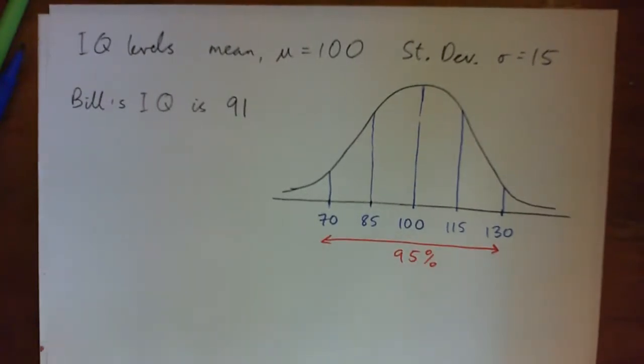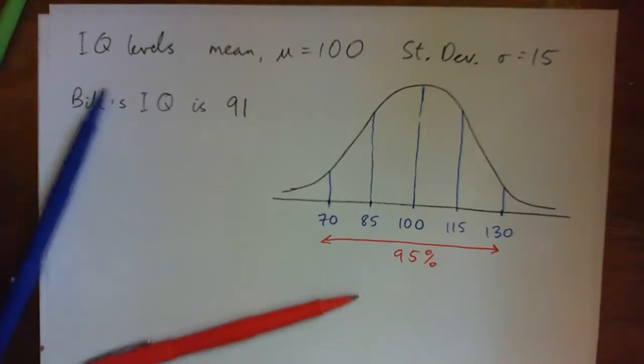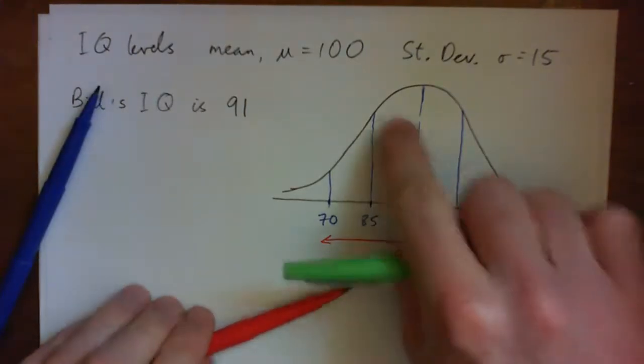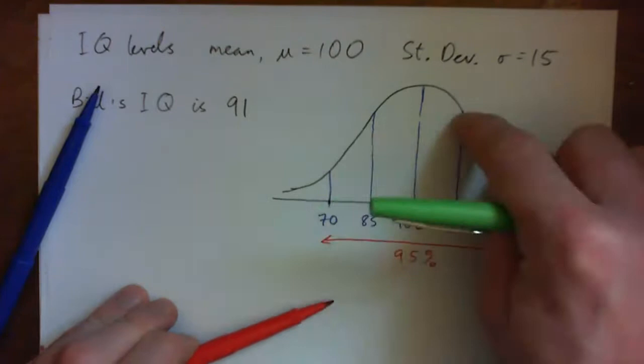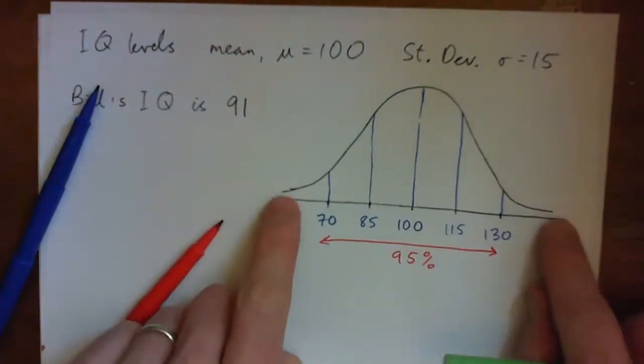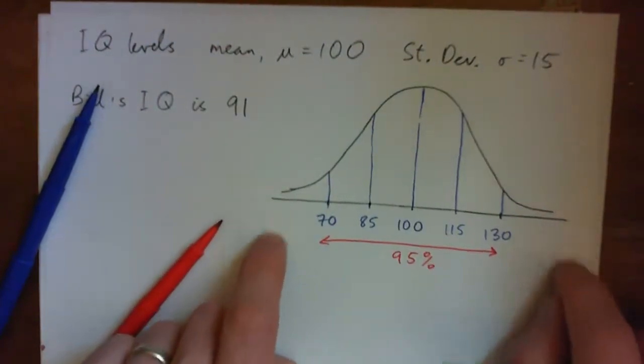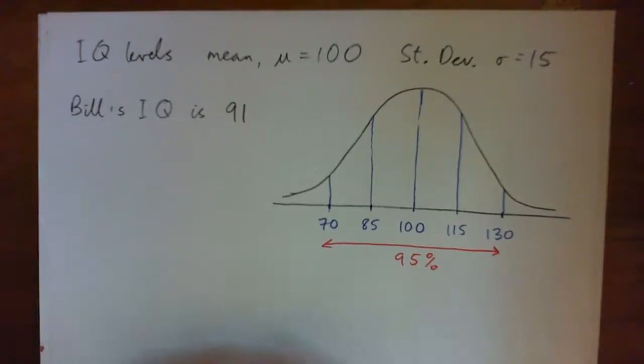You clear on that? Yeah. And the other thing is like 68% have an IQ between 85 and 115, and 99.7 are another standard deviation out. But that's the most important thing.